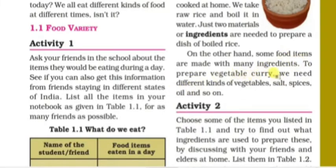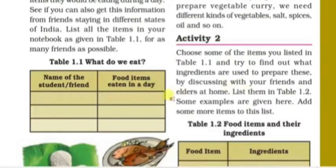To prepare vegetable curry, we need different kinds of vegetables, salt, spices and so on. Activity 2: Choose some of the items you listed in Table 1.1 and try to find out what ingredients are used to prepare these.